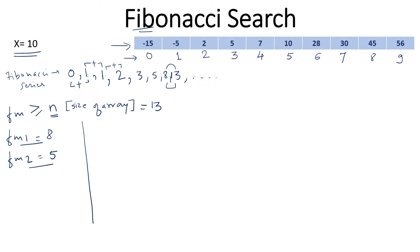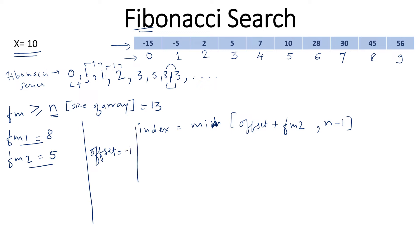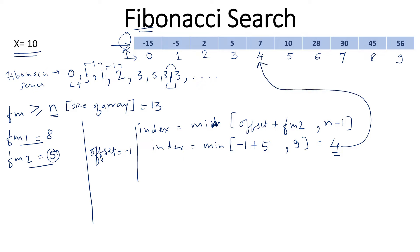We start searching with every iteration by computing an index to check if our element exists there. The index is computed as the minimum of offset plus fm2 and n minus 1. In the first iteration, offset is minus 1. So the index is the minimum of minus 1 plus 5, which is 4, and n minus 1 which is 9. So index is 4. The element at index 4 is 7, and 7 is smaller than 10.